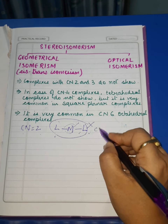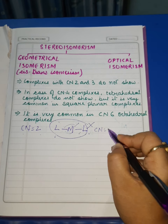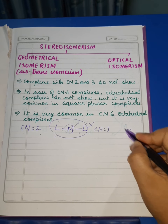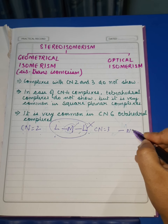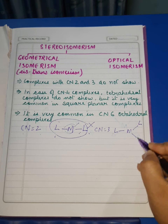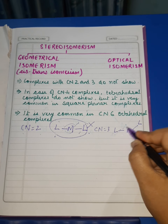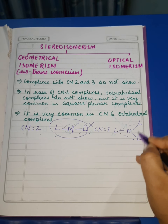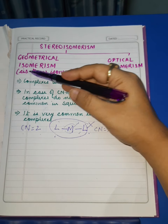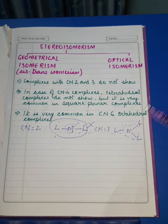The same thing happens with CN3. Its geometry comes out to be trigonal planar, and when the geometry is trigonal planar, we also can't have two cis and trans forms here.